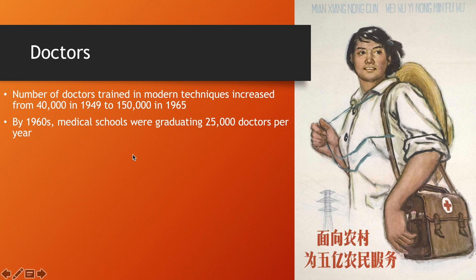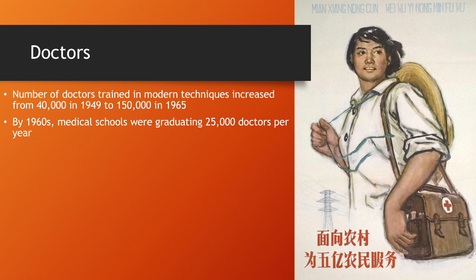Many doctors were trained — not as many as you would hope. Numbers rose from 40,000 in 1949 to 150,000 in 1965. It did increase, but was it enough to provide for China's massive population? Not really. These were professional doctors trained in modern techniques, able to deal with complex diseases and procedures. During the 1960s, medical schools were graduating 25,000 doctors per year, so there was some improvement, but this was mainly limited to the city.